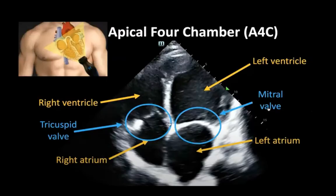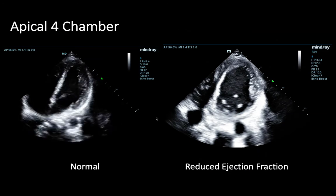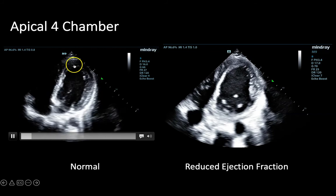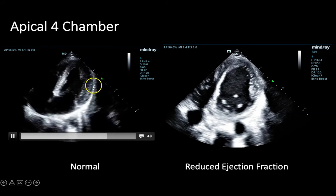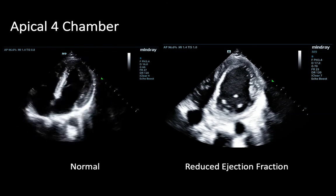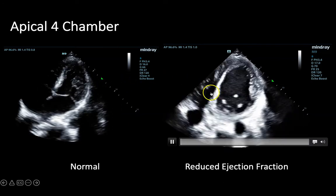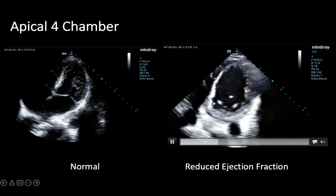Let's next look through the apical four chamber views of the heart. In this view we can see all four chambers: the left ventricle, left atrium with the mitral valve in between, the right ventricle, and right atrium with the tricuspid valve in between. In a normal clip, the walls of the left ventricle are contracting concentrically, representing a normal ejection fraction. Compare that to a clip where the walls of the left ventricle are barely contracting at all, consistent with a reduced ejection fraction.